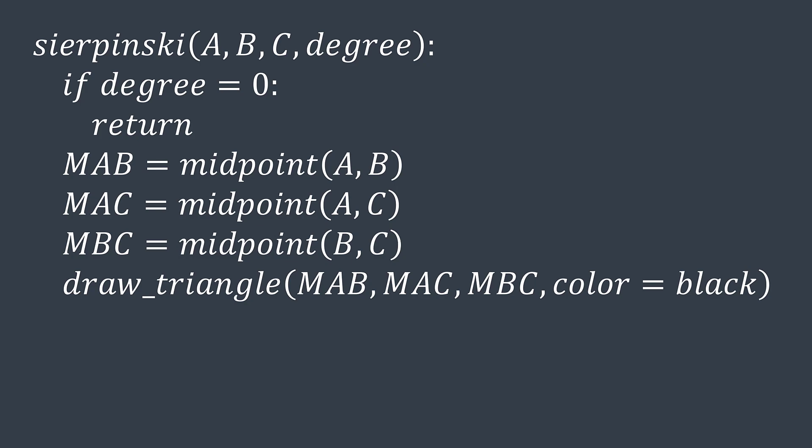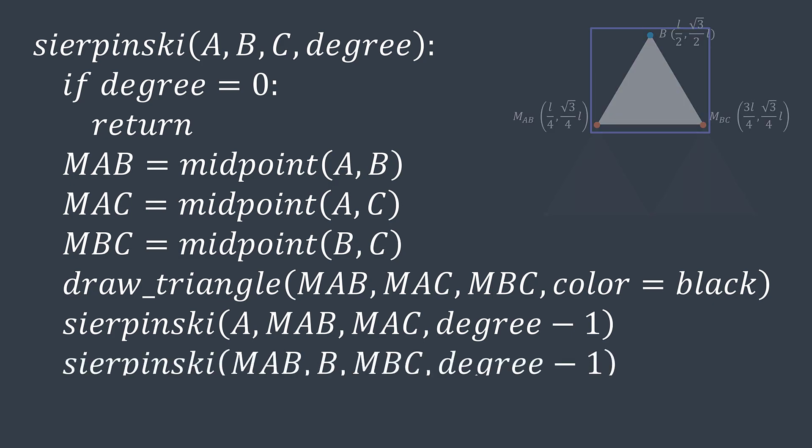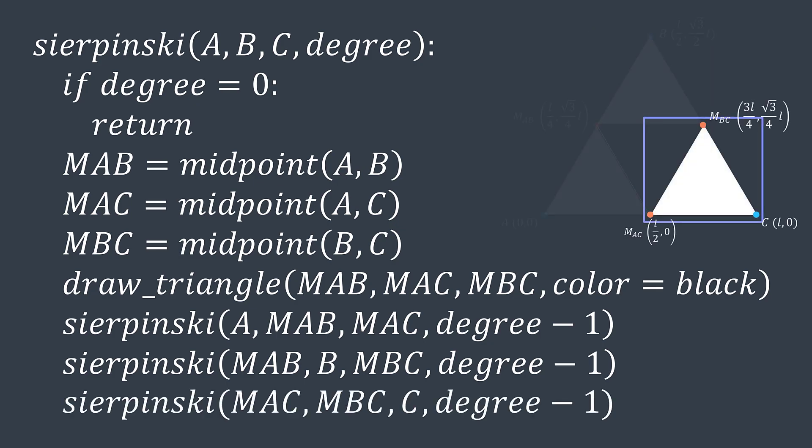Reminder that we have three sub-triangles, one formed by A, mid-AB, and mid-AC, one formed by mid-AB, B, and mid-BC, and one formed by mid-AC, mid-BC, and C.